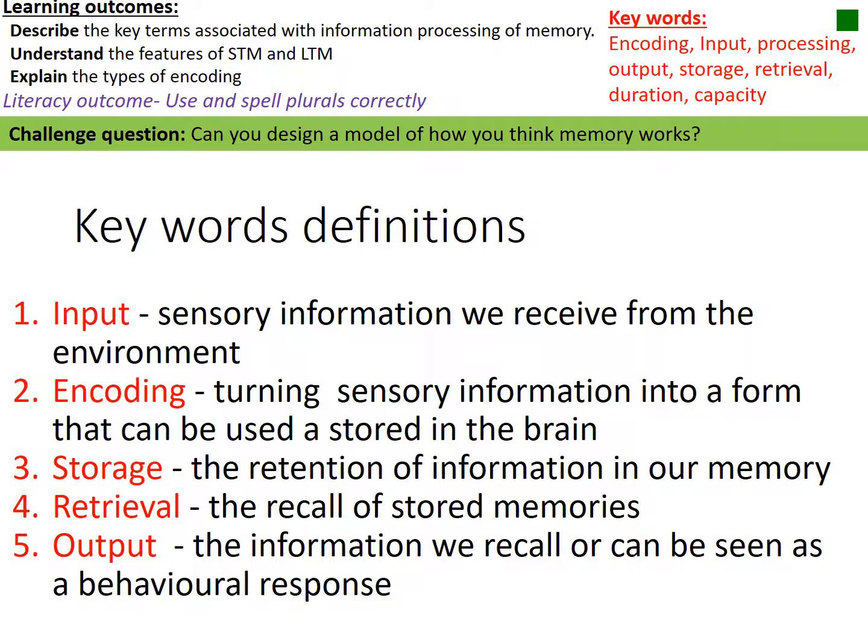You need to understand and use these five keywords. Input: when information comes in from the senses. Encoding: turning sensory information into electrical impulses the brain can use. Storing: retaining information within memory. Retrieval: recalling and bringing that information back to mind. Output: often a behavioral response, such as telling someone a story, or crying because a memory was upsetting.